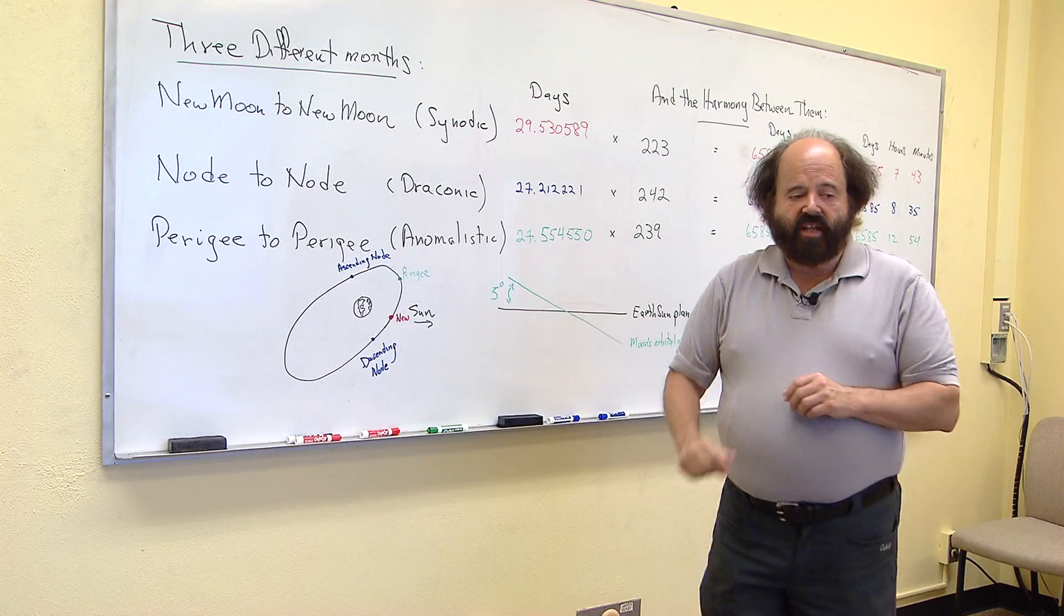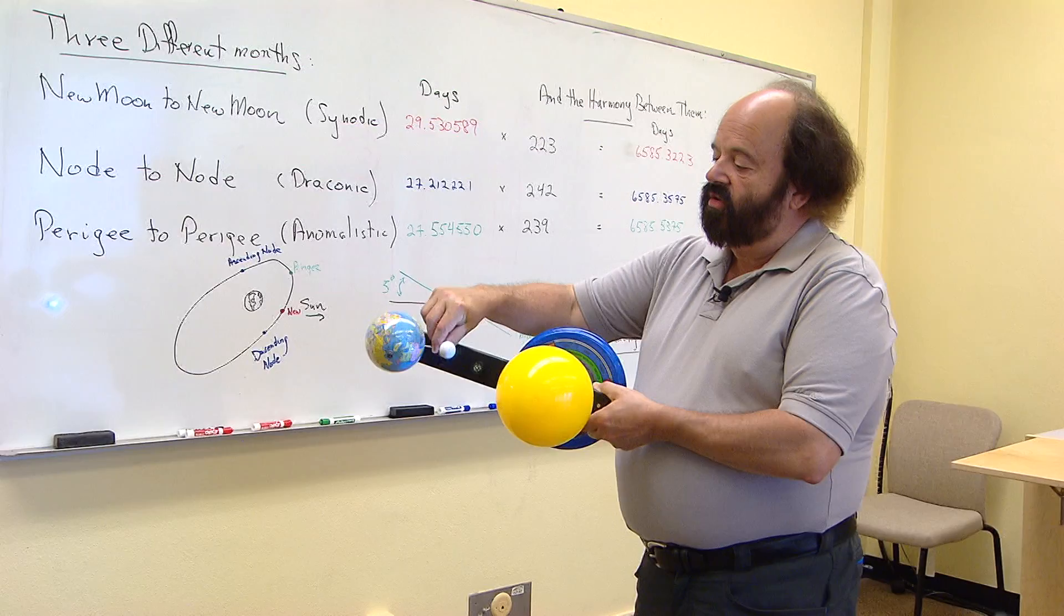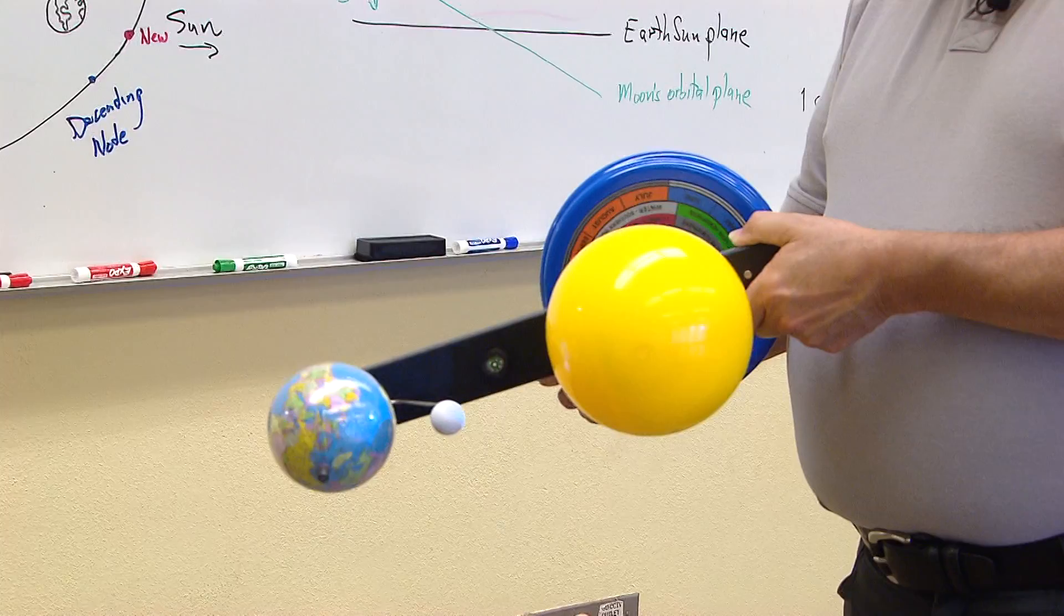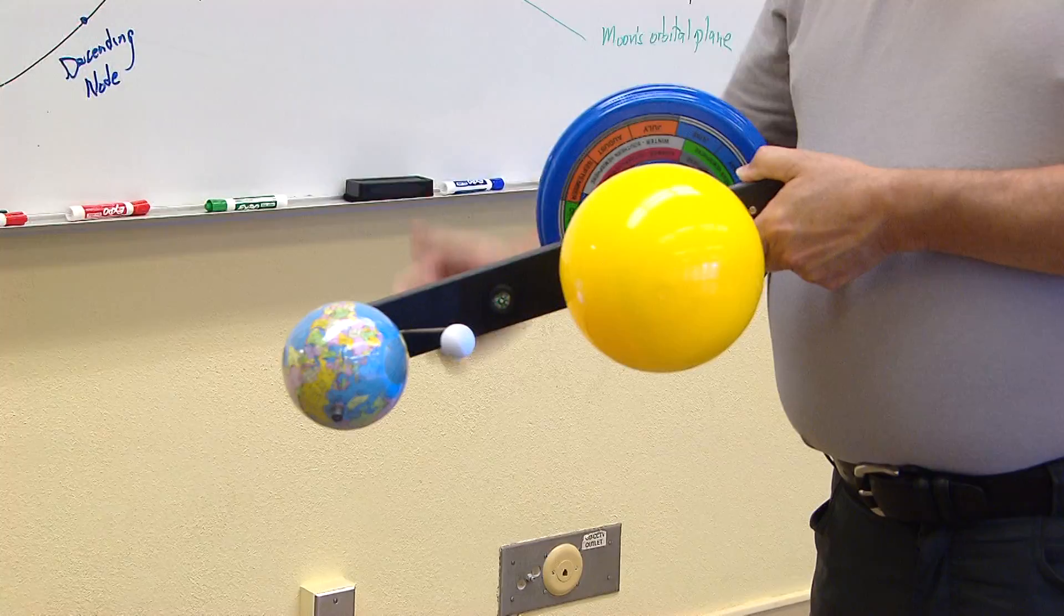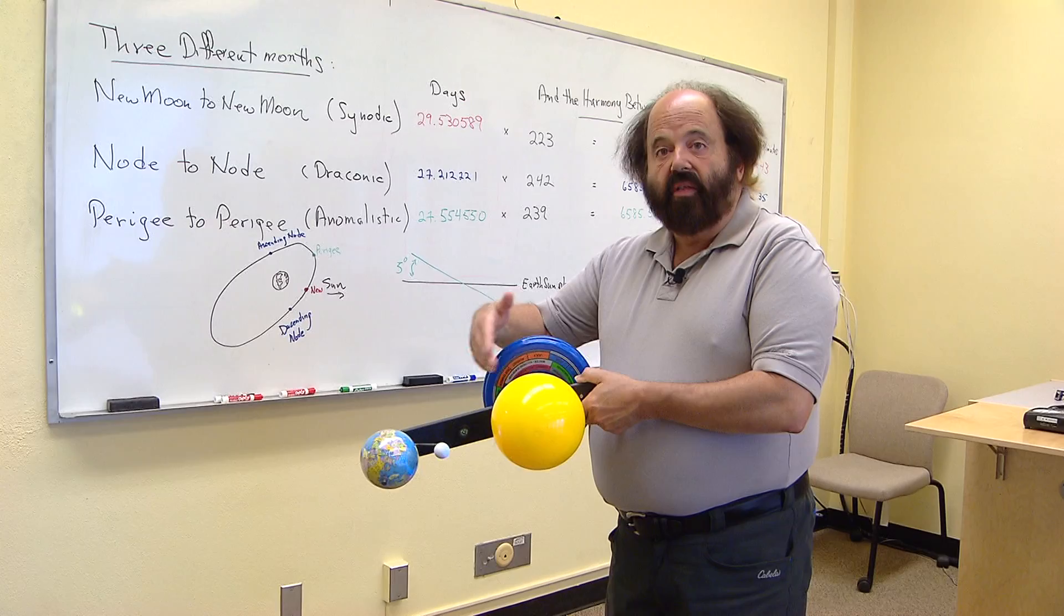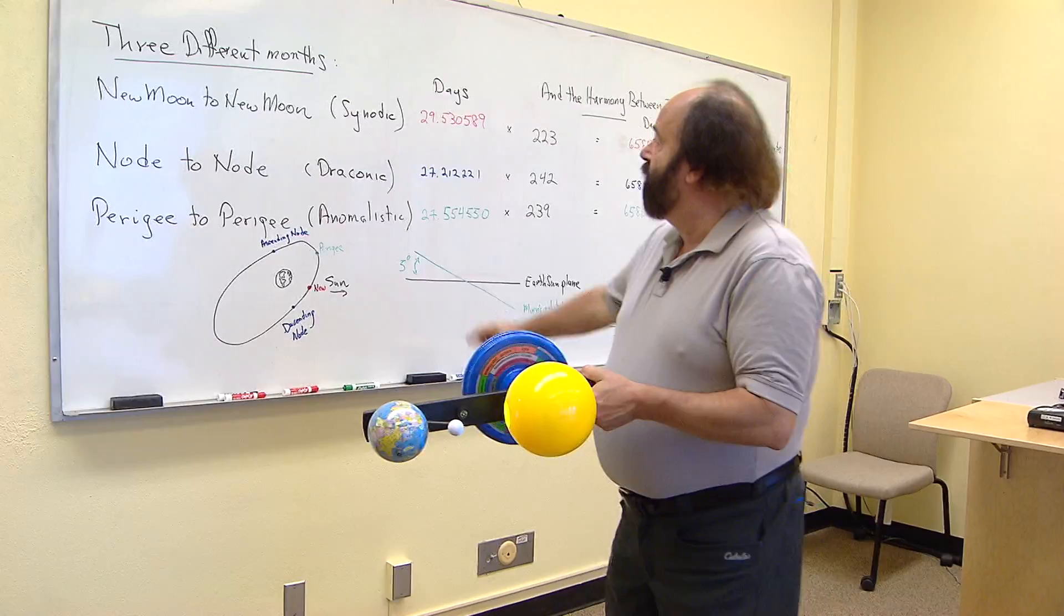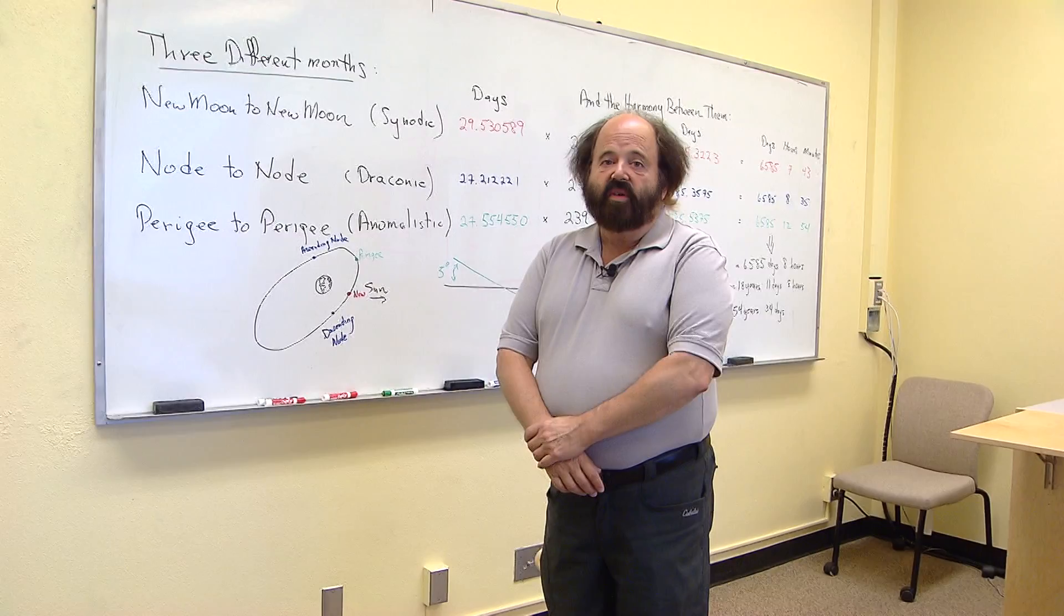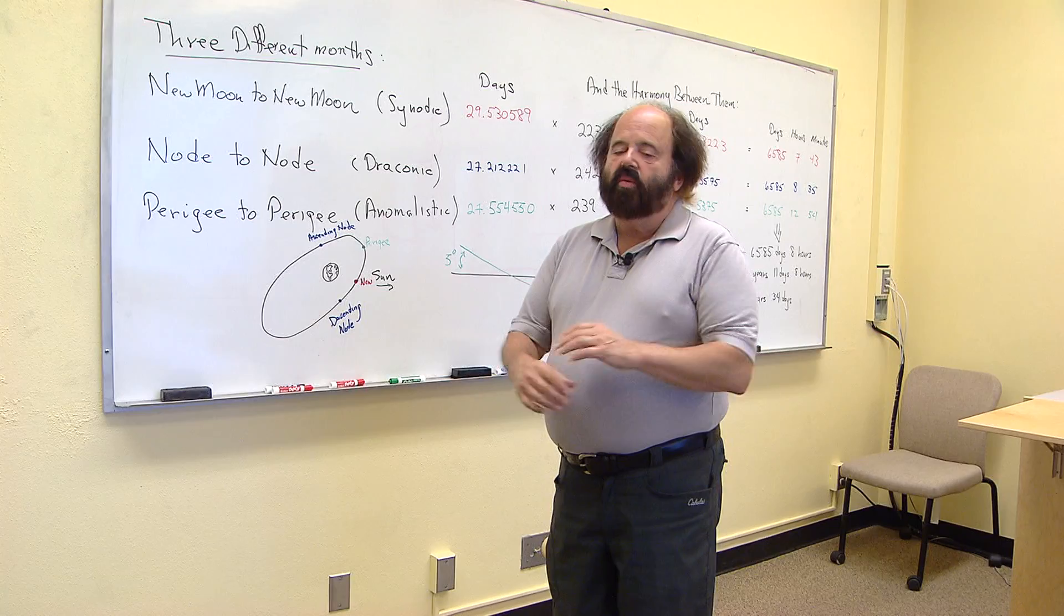Why is that? That's because as the moon is going around the earth here, I'll turn it so you can see it. As the moon is going around the earth like this, the earth is going around the sun like that. So to line up again, the moon actually has to go a little bit further to line up with the sun to be a new moon again. So it's actually a much shorter month to go from closest approach to closest approach than it is to go from new moon to new moon. And this is something that you can measure in the privacy of your own backyard here in Portland. All we need is good clear weather. And for the last 58 days, we've had that.